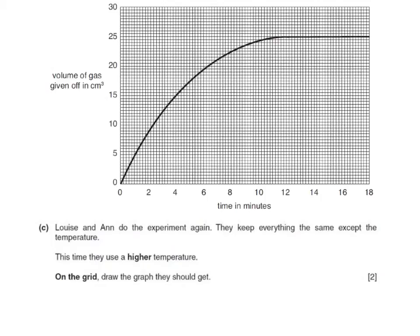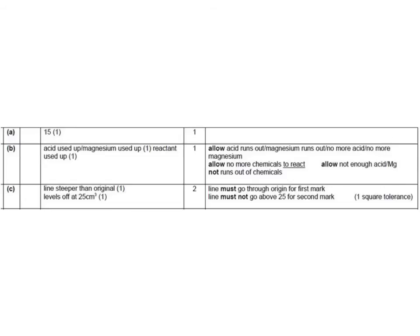The third part of the question says, Louise and Anne do the experiment again. They keep everything the same, except the temperature. This time, they use a higher temperature. On the grid, draw the graph they should get. There's two marks. One mark for showing that the graph would be steeper because the reaction is faster, and one mark for leveling the final volume of gas off at the same as previously. These are the answers to those questions. First one being 15 cubic centimeters. The second one being that either the acid is used up or the magnesium is used up or, generally, the reactant is used up. And the third one, two marks. One for a line steeper than the original but both leveling off at 25 cubic centimeters.